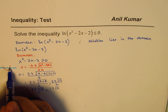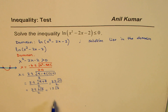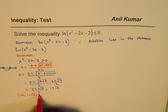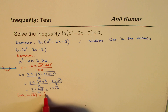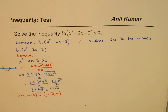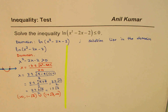The domain of this function is on the right side of one root and on the left side of the other root. So the domain is from (-∞, 1 - √3) union (1 + √3, +∞). That becomes the domain. So the first thing is: find the domain, and whatever solution we get for this inequality, we have to take the intersection of that solution with the domain.